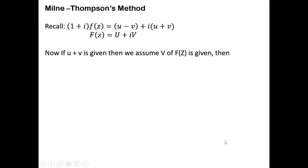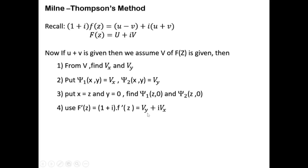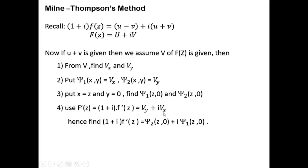Similarly, we can find small f(z) if u + v is given. For that, we first find partial derivatives of Capital V, that is Vx and Vy. We let ψ₁(x, y) = Vx and ψ₂(x, y) = Vy. Then we put x = z and y = 0 in ψ₁ and ψ₂, find the appropriate derivative of Capital F(z) in terms of Vx and Vy, substitute ψ₁ and ψ₂ for Vx and Vy, and finally integrate both sides to find small f(z).